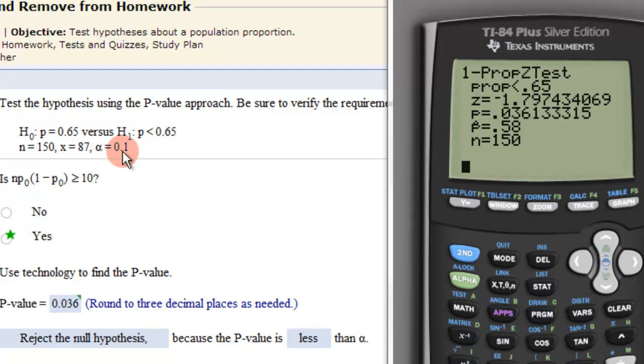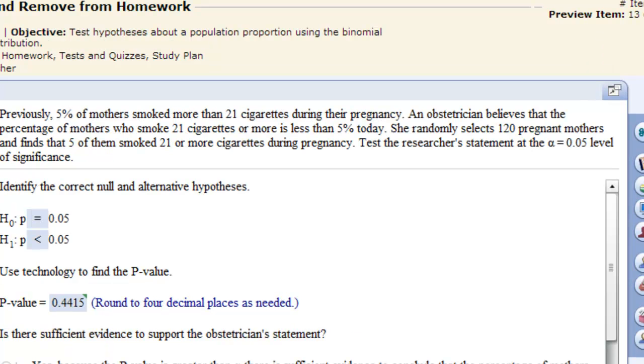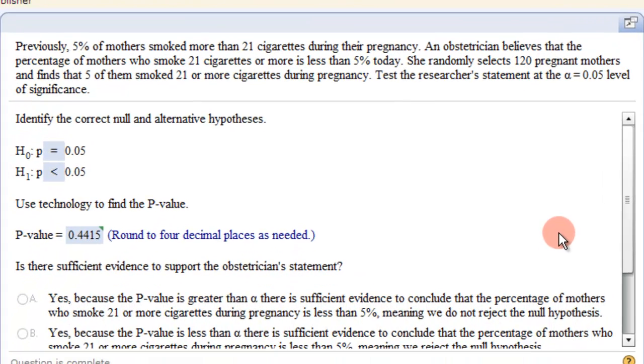So if the p-value is less than this, you reject the null hypothesis. If it is not less than this, you do not reject the null hypothesis. And that's what this says, reject the null hypothesis because the p-value is less than alpha. Let's look at a different problem here.